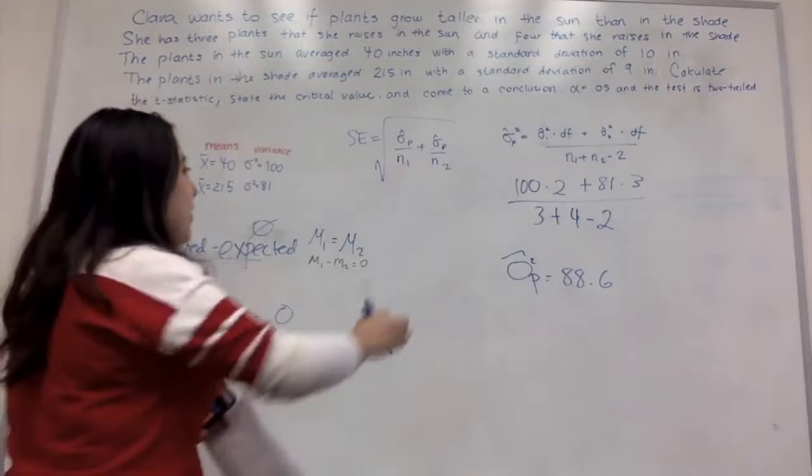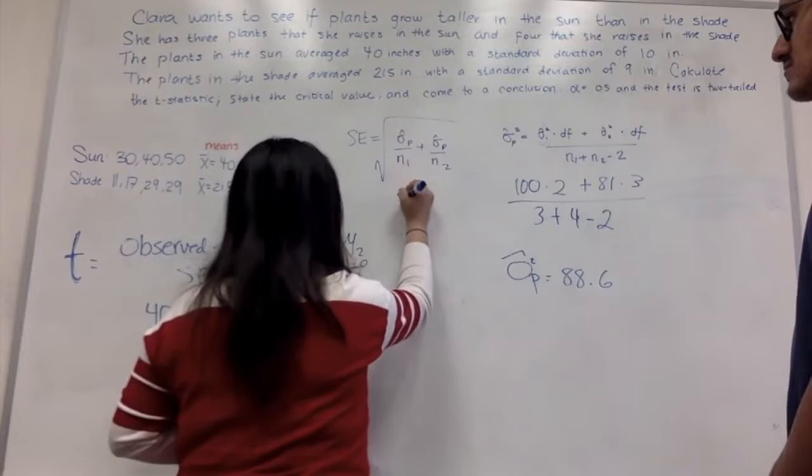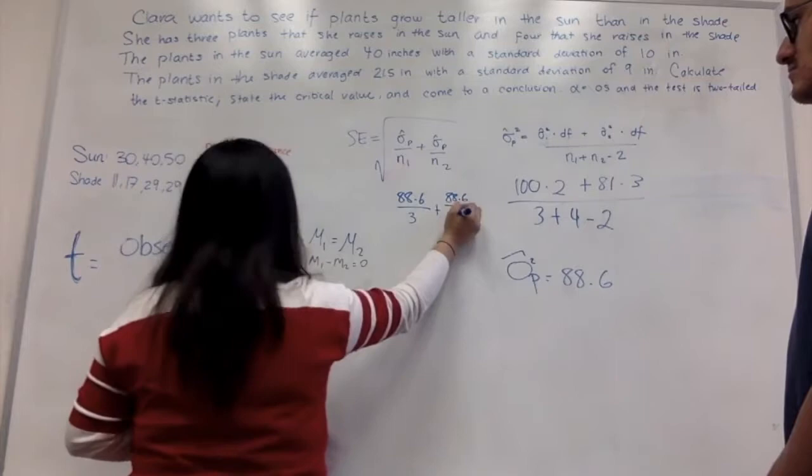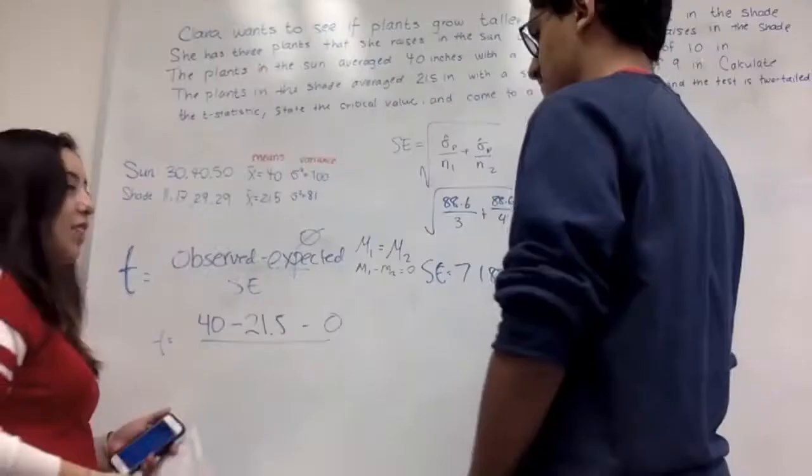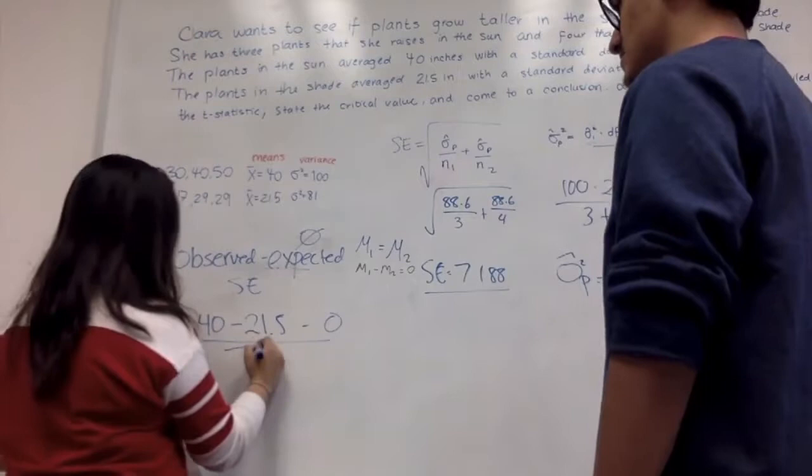We're not done yet. So now you have to plug it in here. Okay, so that's going to be, we're going to do 88.6 over N1, which is 3, plus the same thing, 88.6 over 4. And then we're going to square root that. Okay, so now that we've found the standard error, which is 7.188, we're going to put it in here, which is where our standard error should be, 7.188. Once we do the math, we should be getting 2.573.